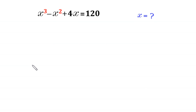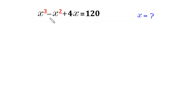Hello, welcome. We need to solve this cubic equation: x cubed minus x squared plus 4x is equal to 120. We need to find all possible values of x.